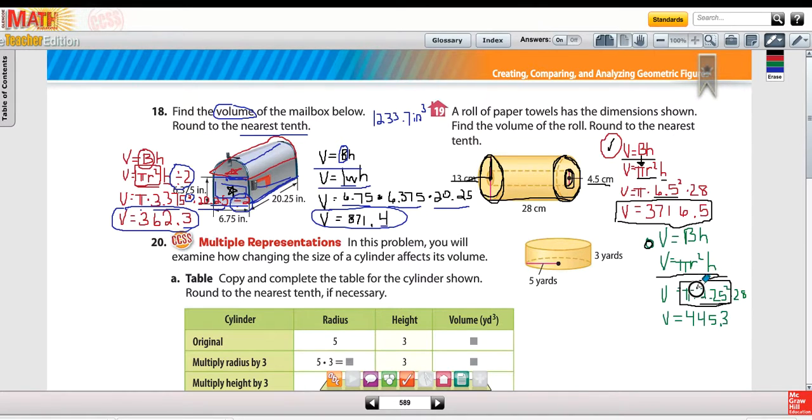Some students make a mistake and say well isn't 2.25 squared the same thing as 4.5, but we know that's not true. 2.25 squared means 2.25 times 2.25, then multiply it by your π and your 28. Please make sure and pause the video and check that on your own calculator just to get practice typing that in and verifying your answer.